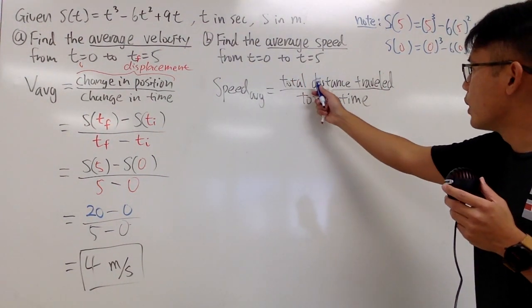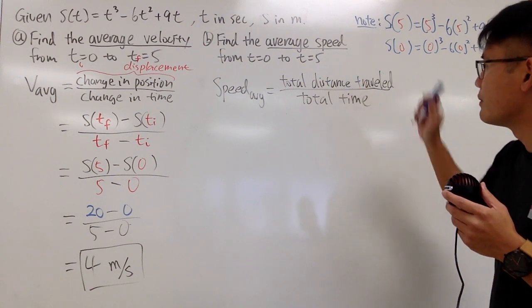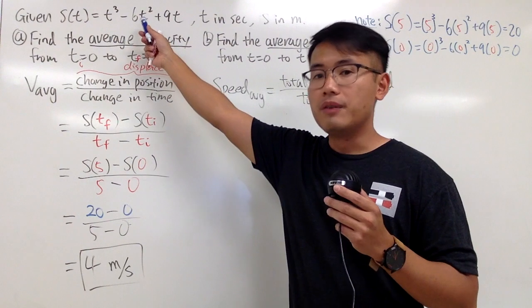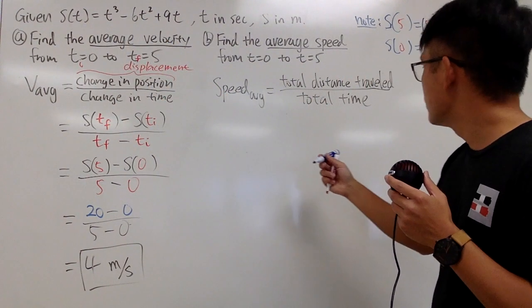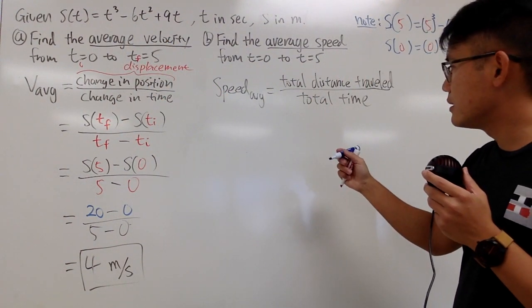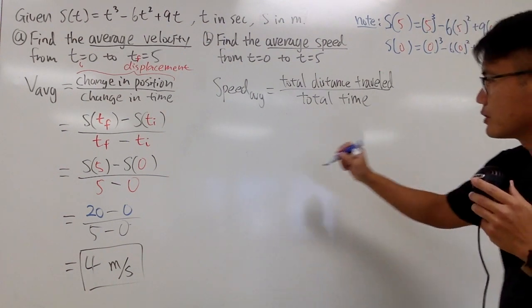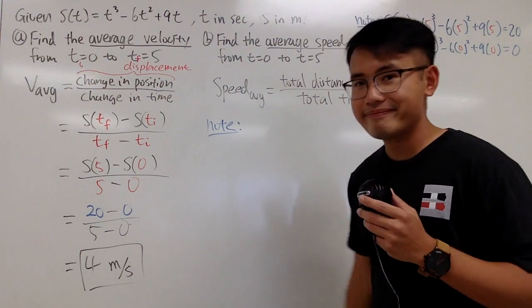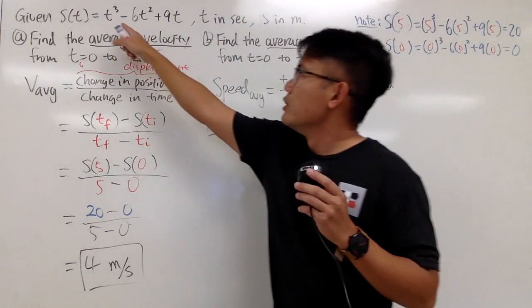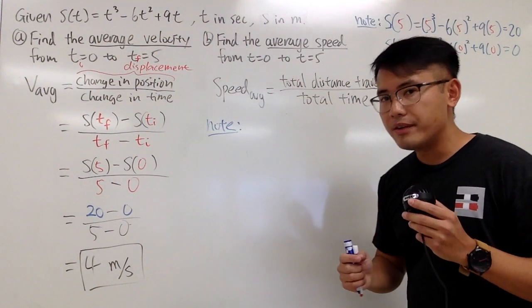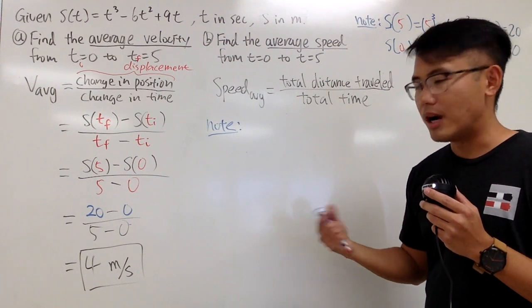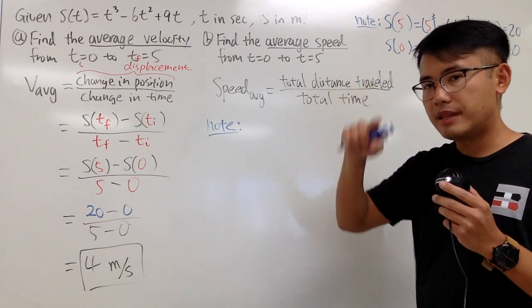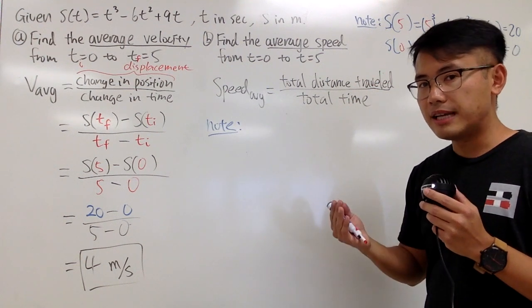So for the average speed, total distance traveled over the total time. In this case, the total time is just 5. To figure out the total distance traveled, we have to look at the velocity function. Because if you graph it, you will see that the position goes up, down, and up. This is the idea: you walk forward sometimes, and you walk backwards.